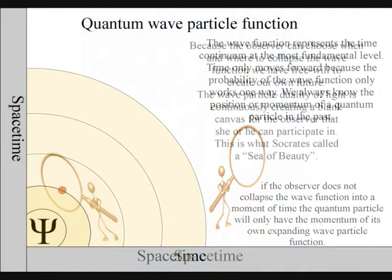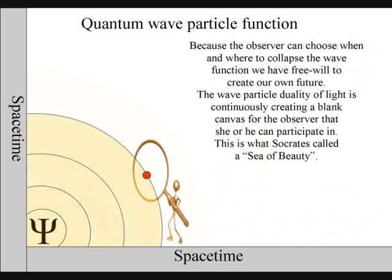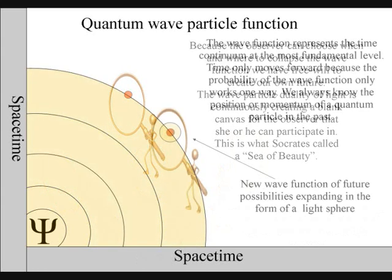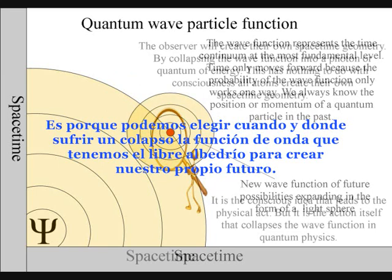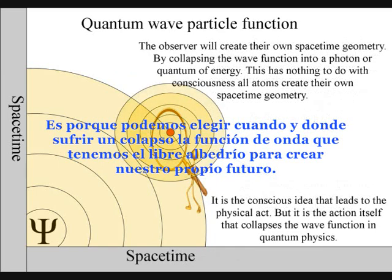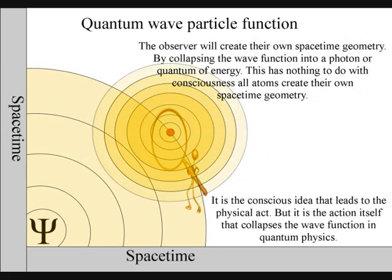It is because the observer can choose when and where to collapse the wave function that we have free will. Life will create its own ripples in the fabric of spacetime, forming its own broken symmetry of its own evolutionary path or timeline.